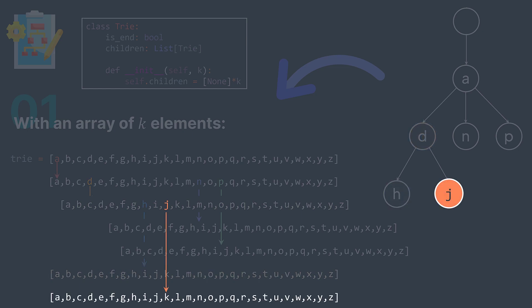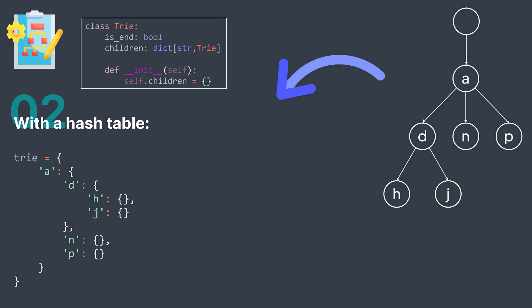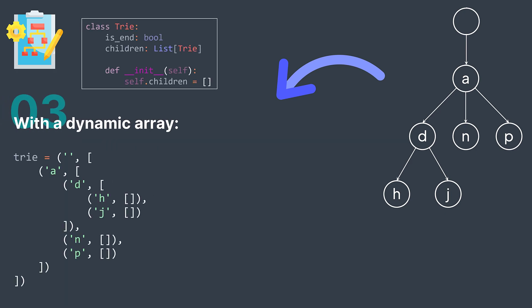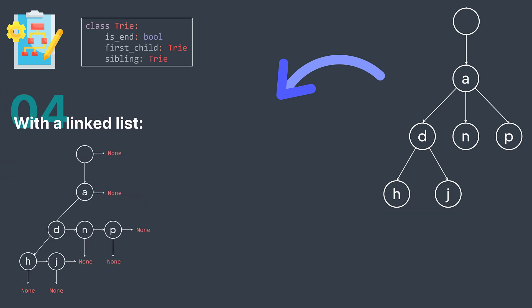The second possible implementation is to use a hash table that maps characters to nodes — the key is a character and the value is the node it points to. The third possible implementation is to use an array of children of type node. And the fourth is to save a reference to the first child only, but also save a reference to the sibling, so children form a linked list.